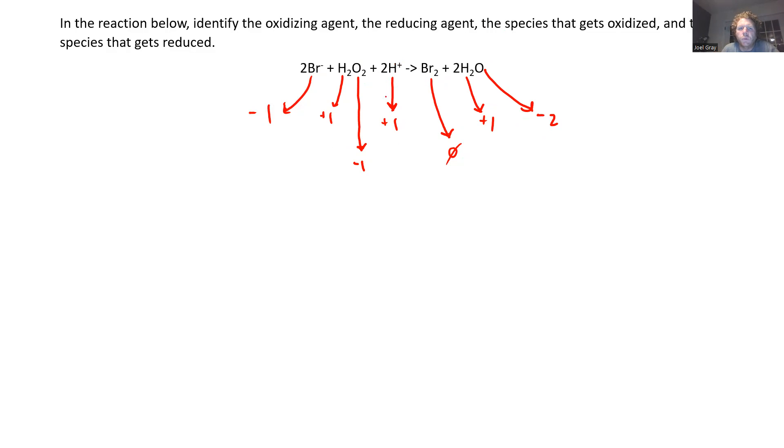So what we want to do with this sort of question is look at what are the species, what are the substances that change charge? Well, one of them is bromine. Bromine went from minus one to zero.